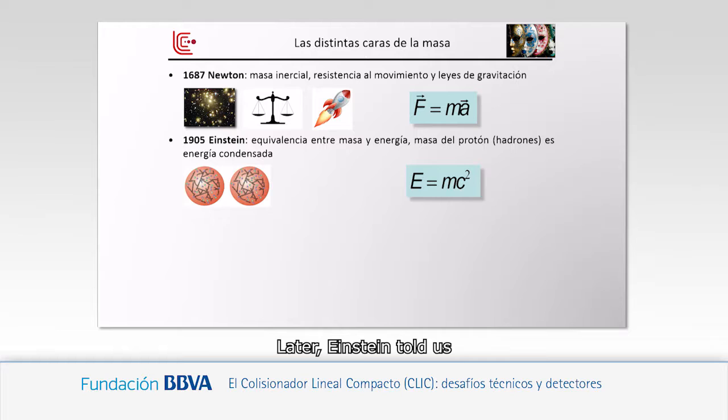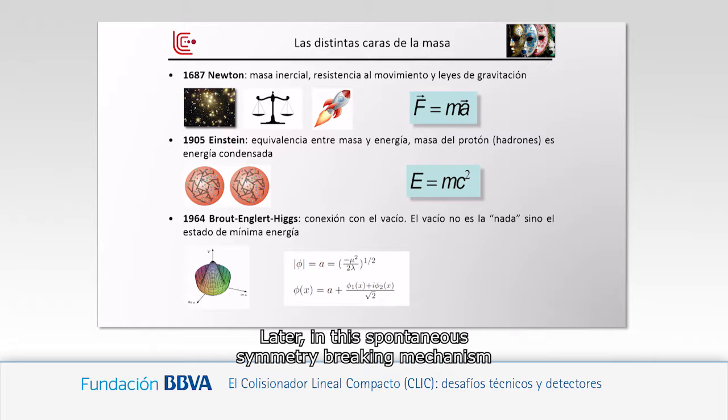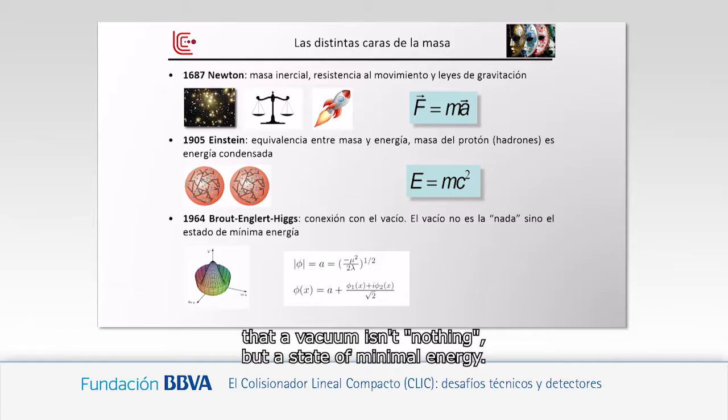Einstein then told us that mass and energy are manifestations of the same thing and are equivalent — he introduced mass as condensed energy. Then, in the mechanism of spontaneous symmetry breaking — with Brout, Englert, and Higgs — mass was connected to the vacuum, saying that the vacuum is nothing but the state of minimum energy.